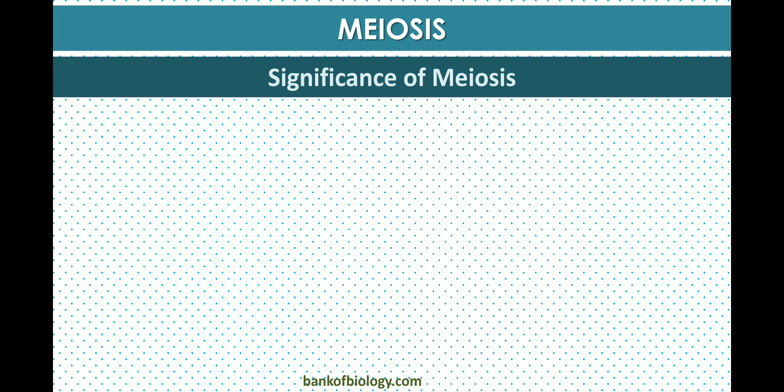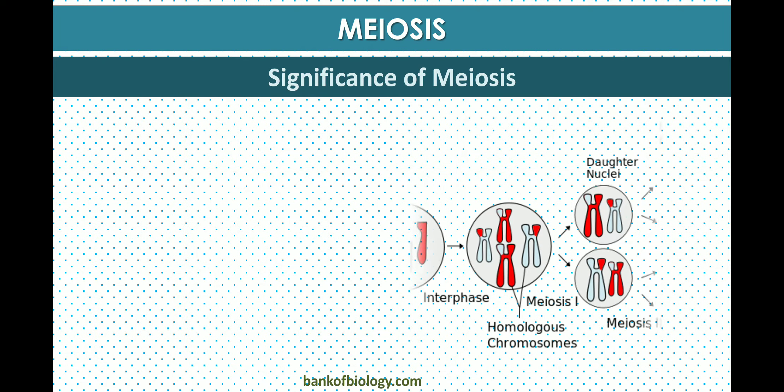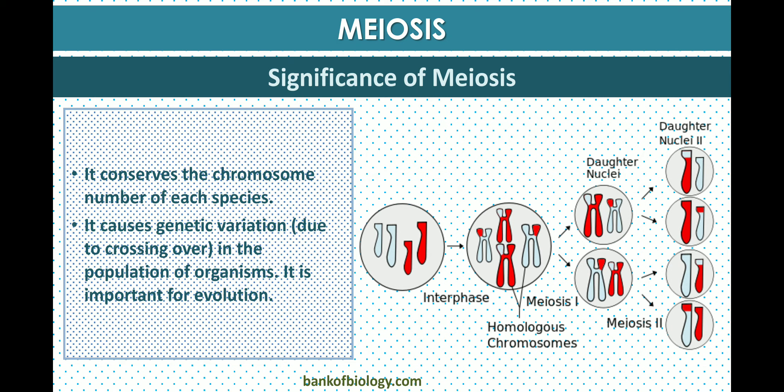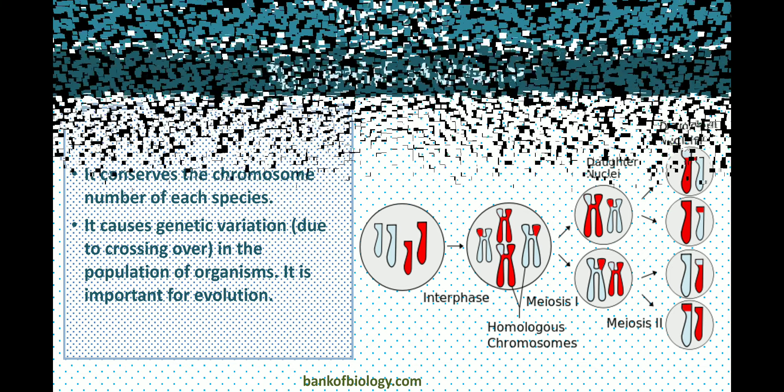The significance of meiosis: first, it conserves the chromosome number of each species. Second, it causes genetic variation in the population of organisms. Third, it is important for evolution.